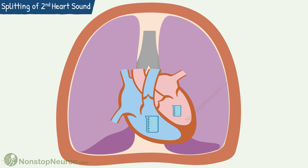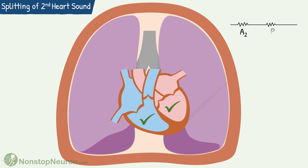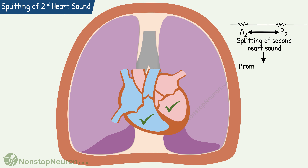So during systole, the left ventricle ejects its amount early, so the aortic valve closes early. However, for the right ventricle, it takes a bit longer to eject this extra amount. So the pulmonary valve closes a little later than usual, and the pulmonary component of the second heart sound is heard later than usual. Thus, the splitting of the second heart sound becomes more prominent during deep inspiration.